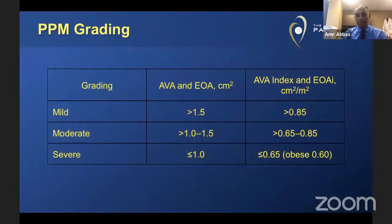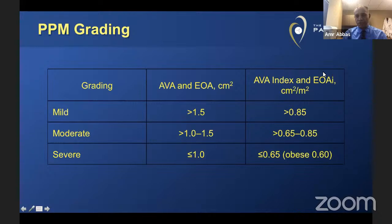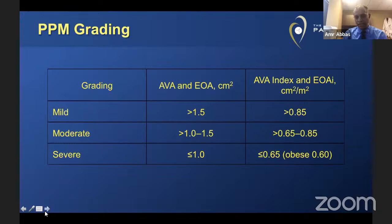PPM has been further categorized according to an indexed valve area. An indexed area less than 0.85 denotes moderate PPM, and less than 0.65 denotes severe PPM. In the newer updated guidelines, the cutoff is less than 0.55. However, in obese patients with BMI greater than 30, these cutoffs have been reported at different values. The idea is severe PPM is less than 0.65, with different cutoffs for patients who have a higher body mass index.